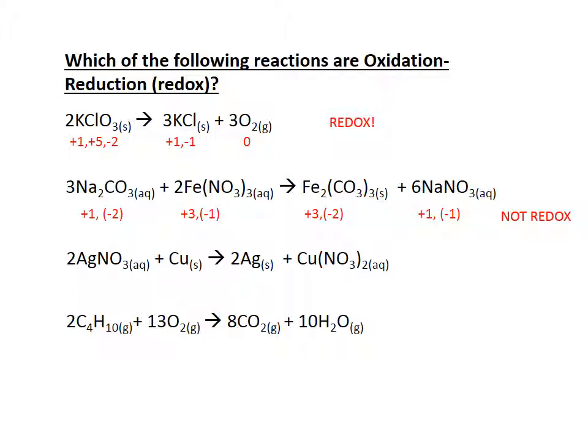For single replacement, I've got copper and silver — I assign zero charge to the free elements. Silver has a plus one charge when combined, since nitrate has a minus one charge. On the product side, there are two nitrate ions at minus one, so copper must have a plus two charge. Silver goes from plus one to zero — gaining electrons, so silver ion is reduced to silver. Copper goes from zero to plus two — losing electrons, so copper is being oxidized.